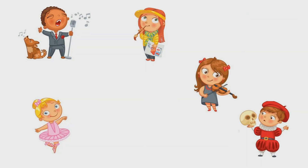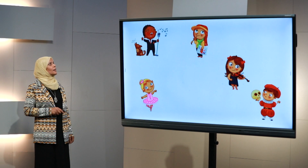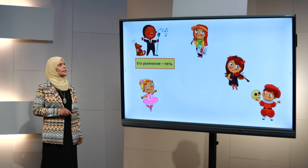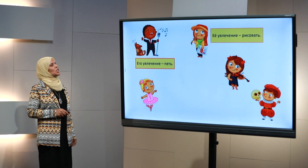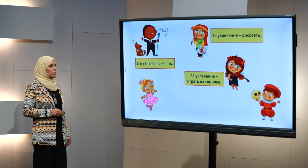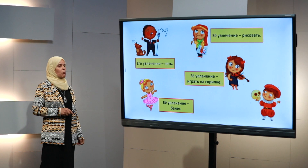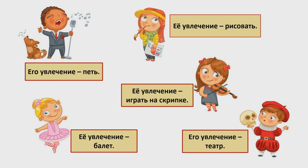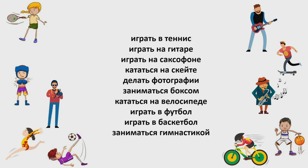Давайте сейчас подумаем вместе, какие увлечения у этих детей. Его увлечение — это пет. Её увлечение — это рисовать. А какое увлечение у неё? Её увлечение — играть на скрипке. Её увлечение — это балет. А его увлечение — это театр. Давайте сейчас соединим каждое словосочетание с подходящим рисунком.